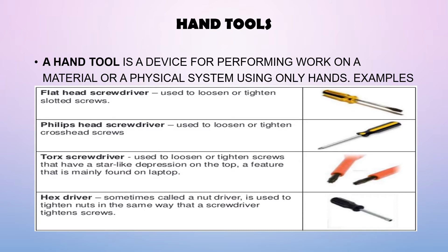Another example is the Phillips head screwdriver, used to loosen or tighten cross-head screws. It is designed to be used with a type of screw that has a slot in its top that looks like a cross. The Torx screwdriver is used to loosen or tighten screws that have a star-like depression on the top, a feature mainly found on laptops. It is shaped like a six-pointed star, and requires star screwdrivers or a star bit to install them.